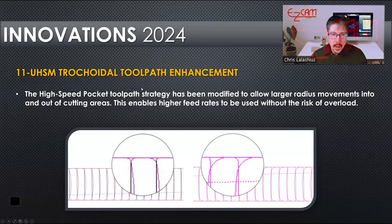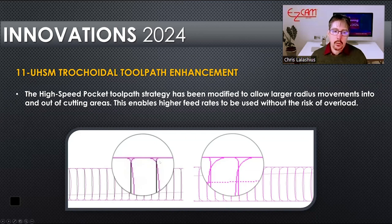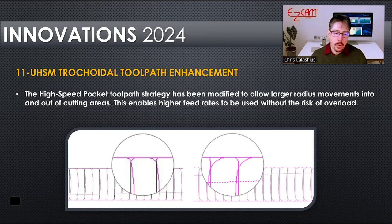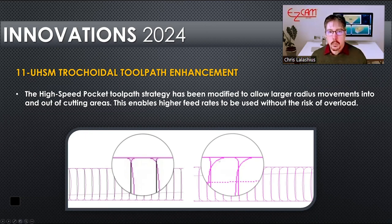Trochoidal toolpath: before 2024, it used to arc into the corners with a smaller arc. In 2024, we made a wider sweep so you can use higher feed rates and get better part finishes that way.